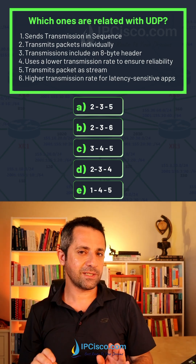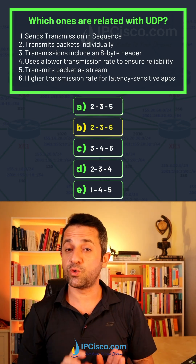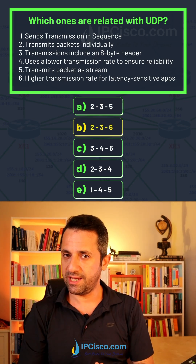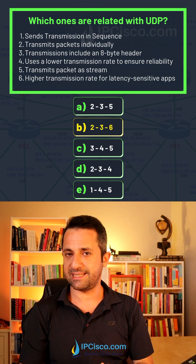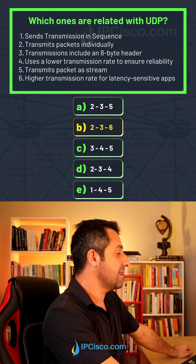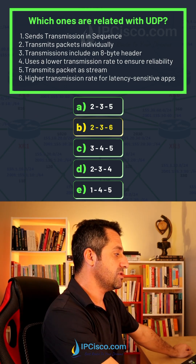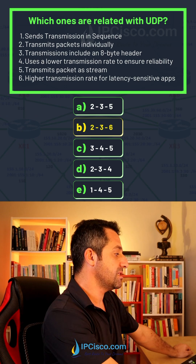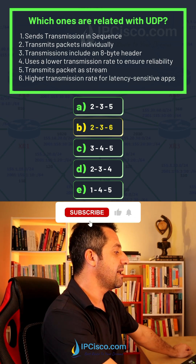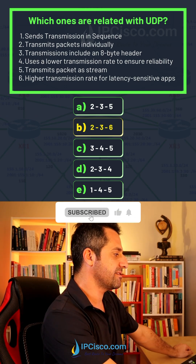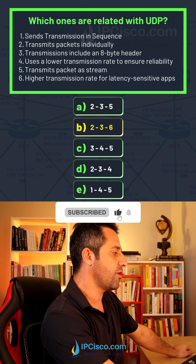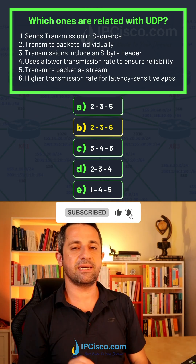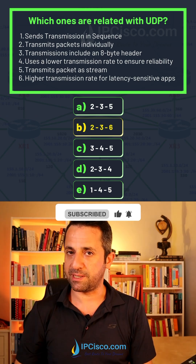So our answers are 2, 3, and 6. Let's remember again: transmits packets individually, transmission includes an 8-byte header, and higher transmission rate for latency-sensitive applications.